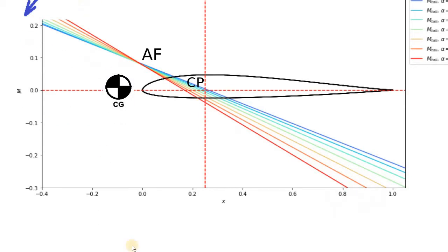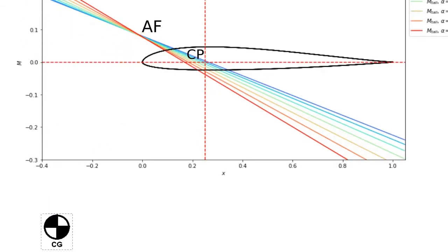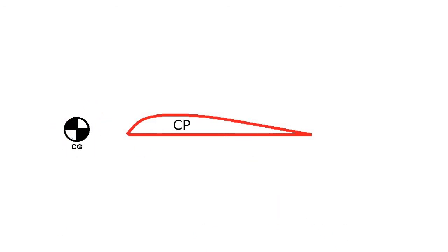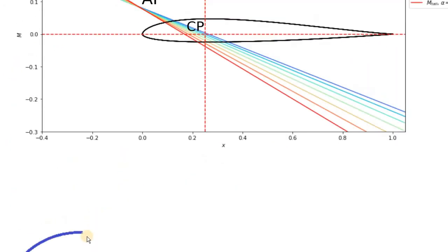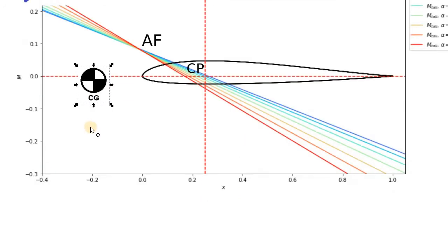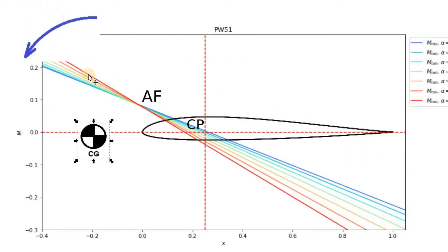To summarize: the center of gravity has to be placed in front of the leading edge of the airfoil, giving us a pitch-down momentum on the airplane. But the negative side is that once the center of gravity is placed at a nice stable position, we have a non-zero momentum acting on the airplane about the center of gravity. This momentum has to be cancelled — otherwise the plane is not going to be stable and will fly into the ground.